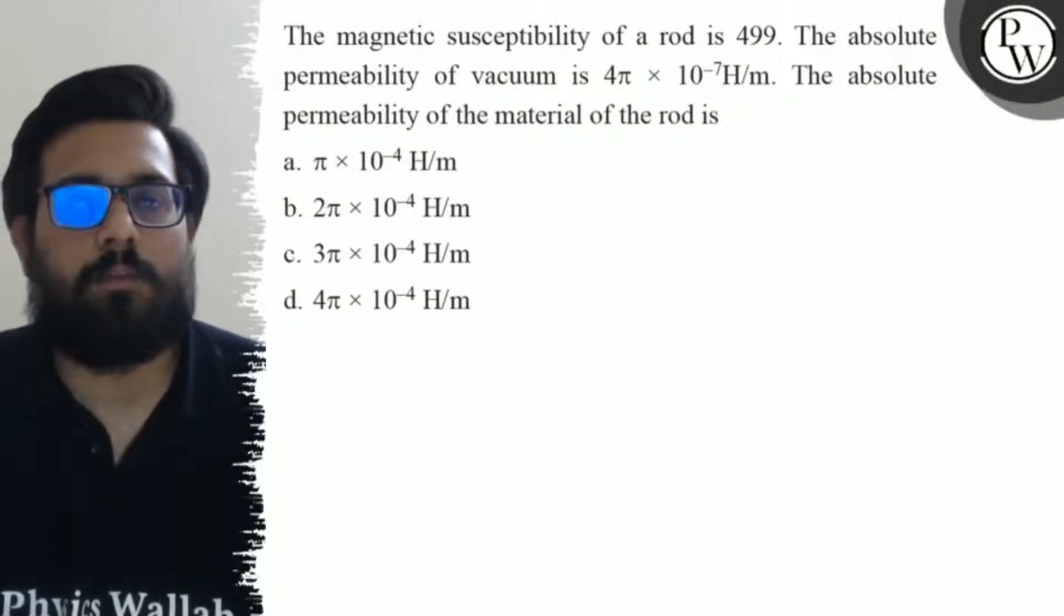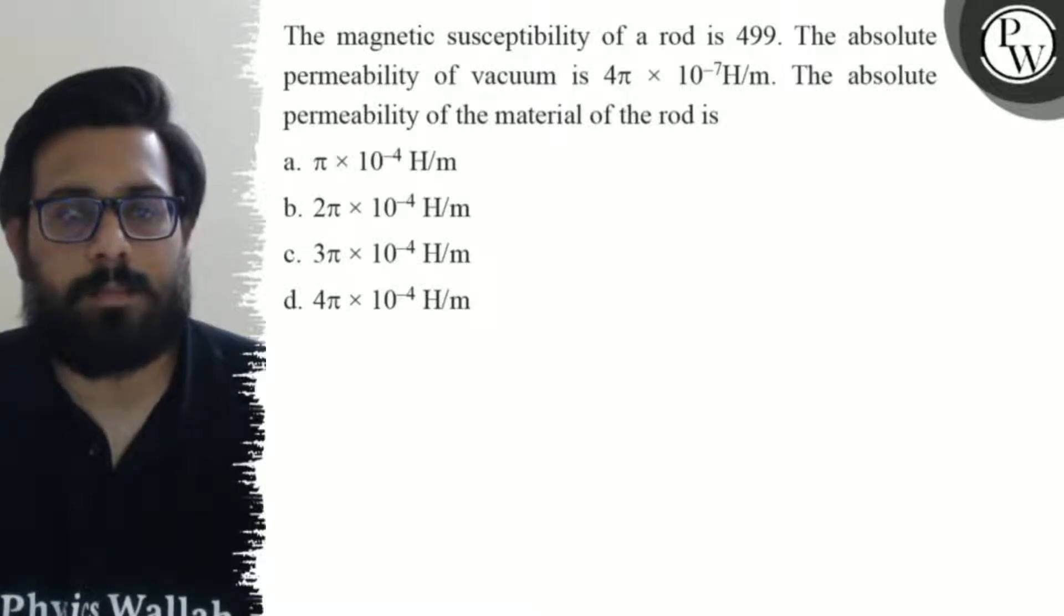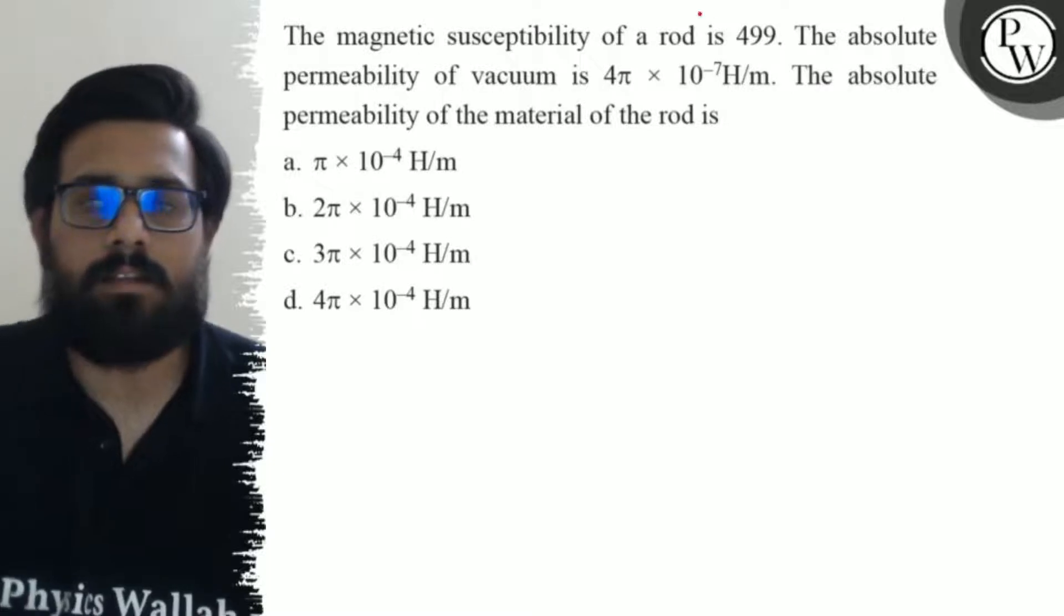The absolute permeability of the material of the rod is: option A is π × 10^-4 henry per meter, option B is 2π × 10^-4 henry per meter, option C is 3π × 10^-4 henry per meter, and option D is 4π × 10^-4 henry per meter.